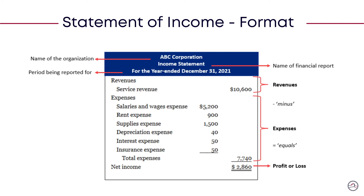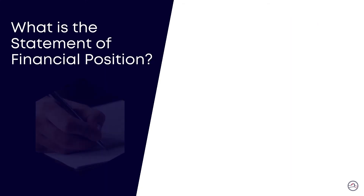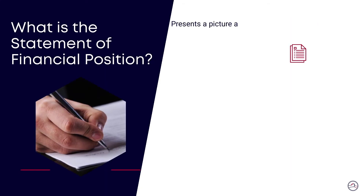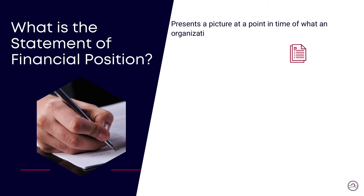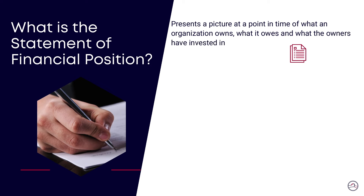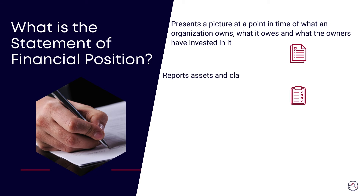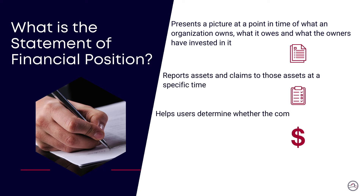After preparing the income statement, we work on the balance sheet, also known as the statement of financial position. A balance sheet helps readers understand the accumulated wealth of an organization at a given point in time. It describes what an organization owns, owes, and the investment from its owners. It helps users understand whether an organization is reliant on its owners' monies or if it is borrowing from others. It brings everything together in the form of a basic accounting equation: assets are equal to liabilities and equity.